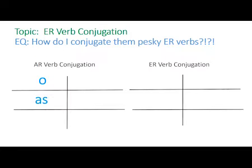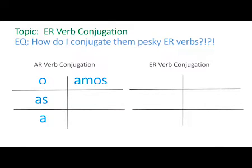See, the AR verb conjugation chart, that one's easy as pie: O, A, AS, A, AMOS, and then at the bottom, and if you're in Spain, you can use that vosotros. You know that one backwards and forwards. But what about ER? Now you know ER verb conjugation — it's just as simple. Just replace the A's with E's.